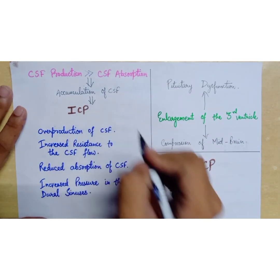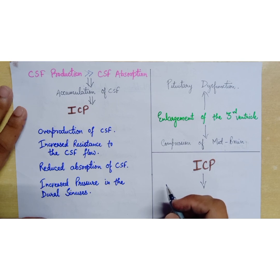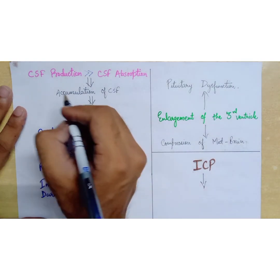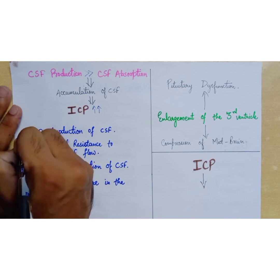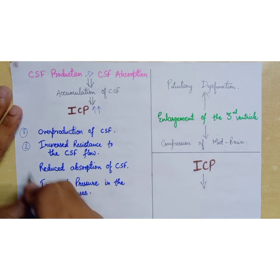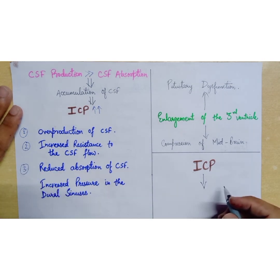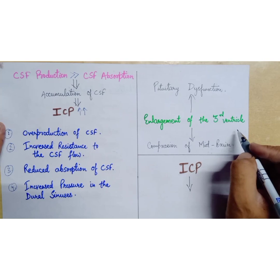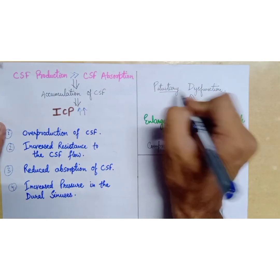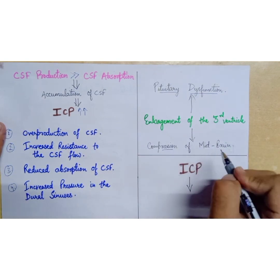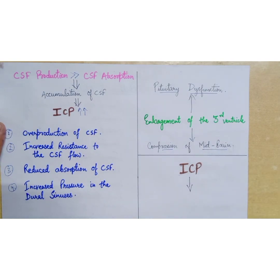An increase in CSF production over its absorption may lead to accumulation of CSF in the ventricles and subarachnoid space, ultimately causing increased intracranial pressure. This imbalance may be caused by overproduction of CSF, increased resistance to CSF flow, reduced absorption, or increased pressure in the dural sinuses. Enlargement of the third ventricle may suppress the pituitary, causing pituitary dysfunction, compress the midbrain, and increased intracranial pressure may cause cerebral herniation.